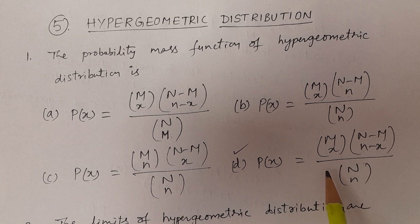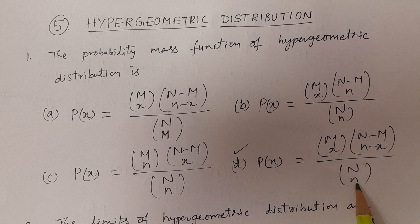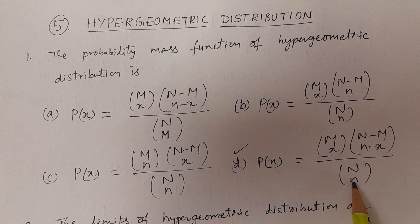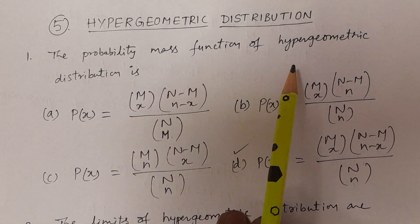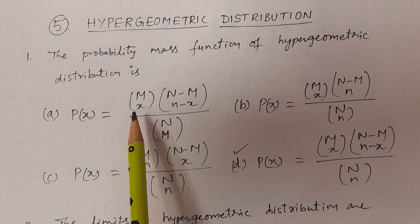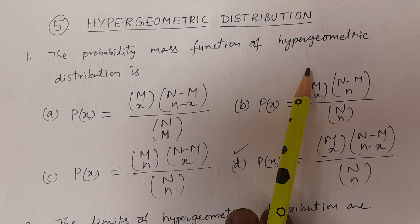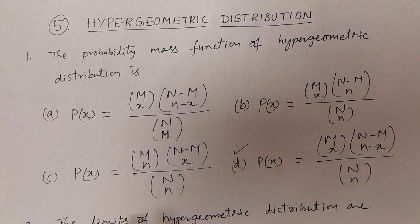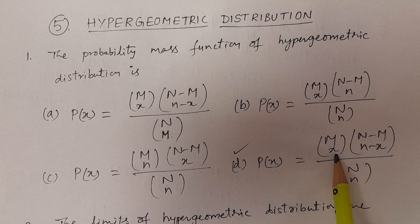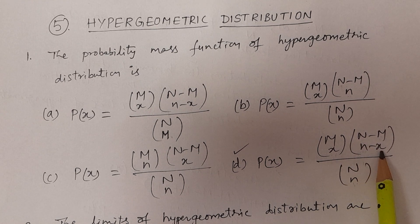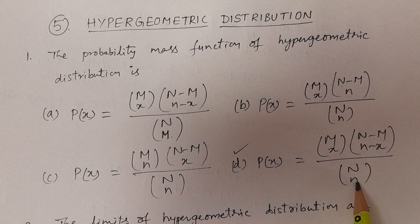The hypergeometric distribution probability mass function is MCX · (N minus M)C(N minus X) divided by NCN. This is the formula. In Telugu: the correct answer is P(X) = MCX multiplied by (capital N minus M) C(N minus X), divided by capital N C small n.